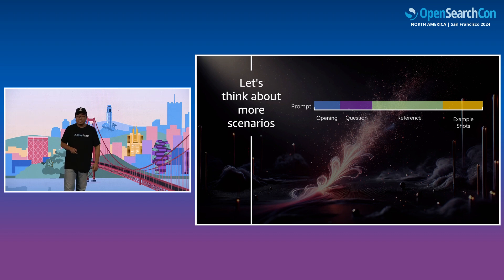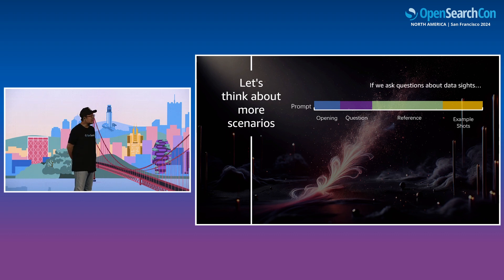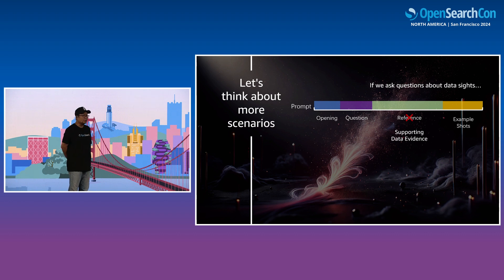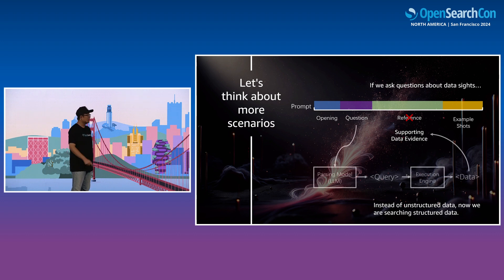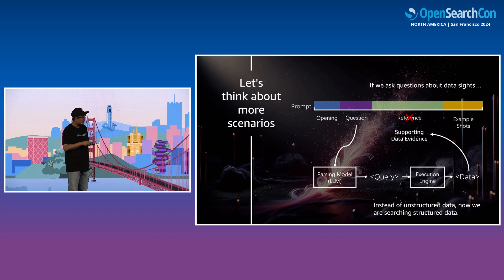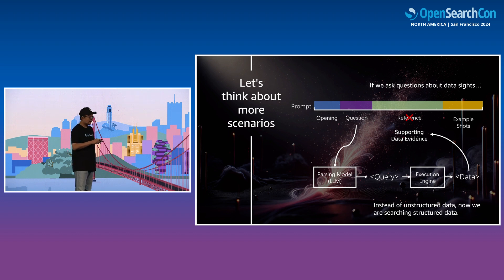Let's think about more scenarios beyond NeuraSparse. Recalling the RAG prompt: what if people are asking questions about data insights instead of knowledge? We are not searching over a knowledge base — we should be providing supporting data evidence. That's more interesting when we search structured data rather than unstructured data. What we propose is to transform the question into a real data analytics query instead of an unstructured semantic query. After execution in OpenSearch, the data serves as supporting evidence to answer the question. This is what we call data analysis RAG.